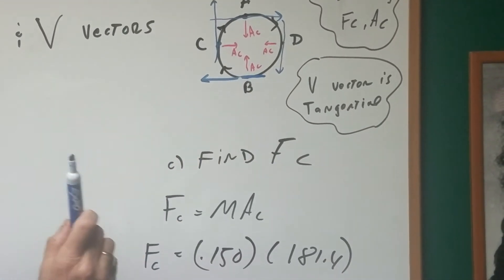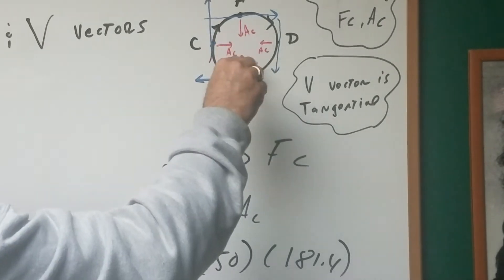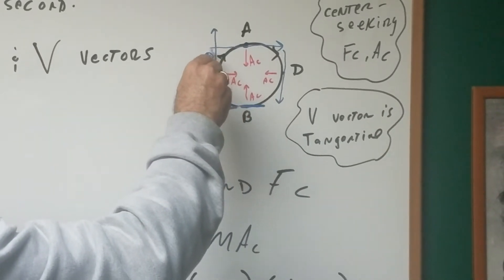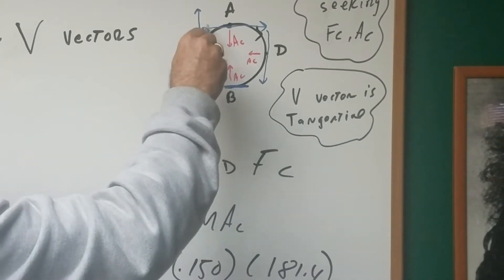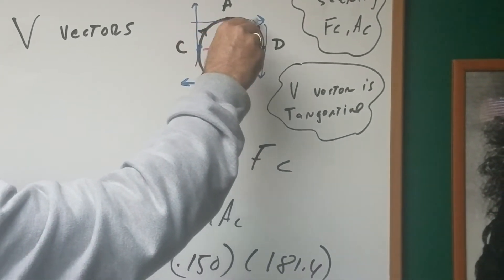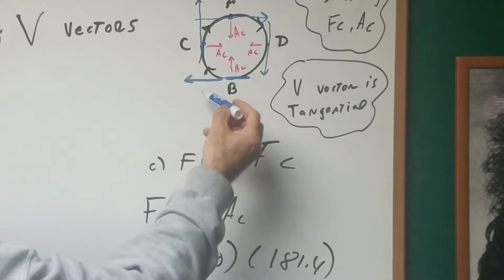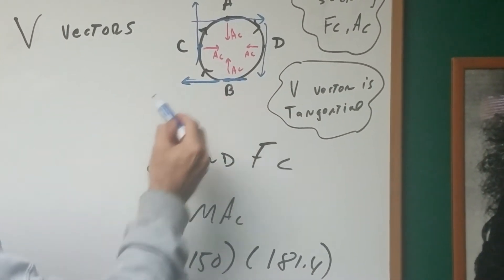Velocity is tangent to the direction of motion. So if it's going clockwise and you're at A, just follow the direction of the motion. Therefore, the tangent line would be going to the right. At B, the tangent line would be going to the left.